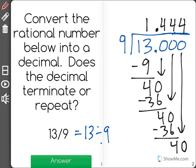So our decimal will end up being 1.4444 on and on forever, or we could just call it 1.4 repeating. So this decimal repeats.